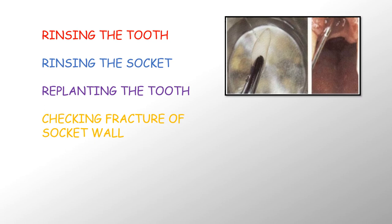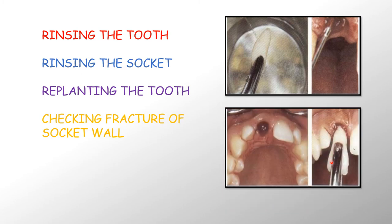The tooth is held by forceps and thoroughly rinsed with a stream of saline until all the dirt and signs of contamination are removed. This clean tooth is then stored in a dish containing saline. After this, we flush the alveolar socket with saline to remove any coagulum that might be present there. With our tooth clean and our alveolar socket totally ready, we are all set to re-implant the tooth.